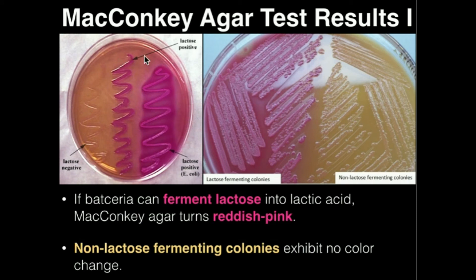On this image here on the left, we see that the right side of this MacConkey agar is actually where we had gram-negative bacteria that can ferment lactose into lactic acid. That's indicated by these hot pink regions. In some cases you'll have some hot pink diffusing away from the actual streak, and in some cases like here in the middle you will not. In either case, we see this hot pink color, and therefore we know these two regions — the middle and the right side — have gram-negative bacteria that are able to ferment lactose into lactic acid.